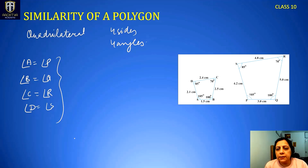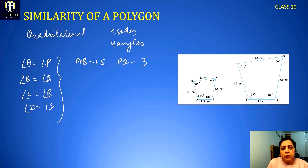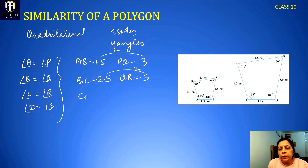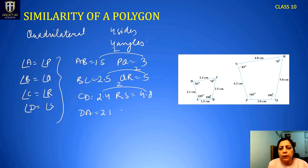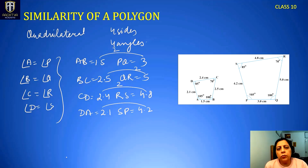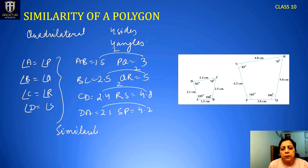Now check the sides. AB is 1.5 and PQ is 3 — PQ is twice of AB. BC is 2.5 and QR is 5 — again 2 times. CD is 2.4 and RS is 4.8 — 2 times. DA is 2.1 and SP is 4.2. You can see all four sides of the second quadrilateral are two times the respective sides of quadrilateral ABCD. This is how we check the similarity of two polygons.